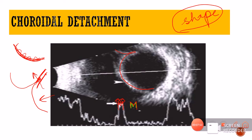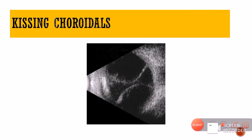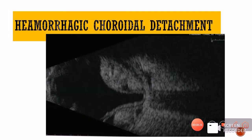In this choroidal detachment, we can see an echo-lucent zone — no echoes coming from the center of the choroidal detachment — meaning this is a serous choroidal detachment. This next case shows kissing choroidals: one choroidal detachment coming from one side and one from the other, both coming very close to each other — looking as if they are kissing — hence the name kissing choroidals.